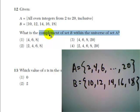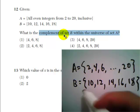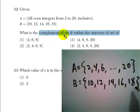Okay, so the complement of set B would be any number that's not in set B. Now, there are quite a few numbers that are not in set B, so this problem tells us within the universe of set A.